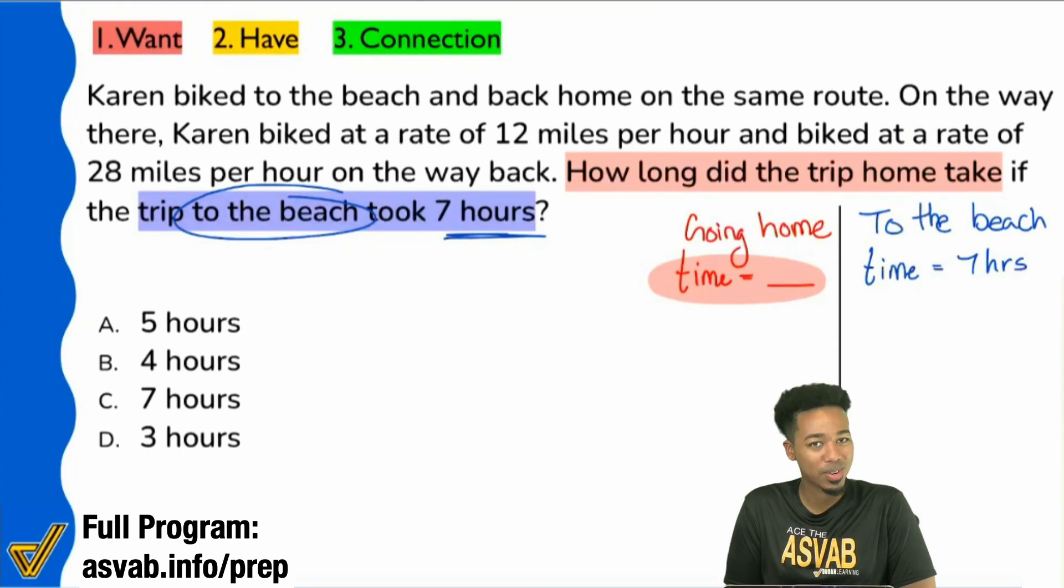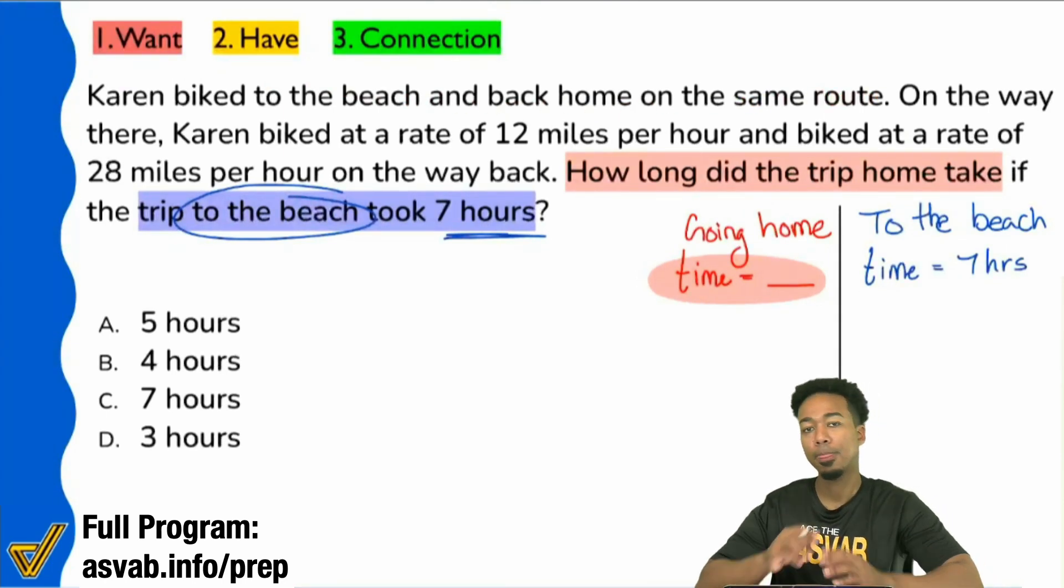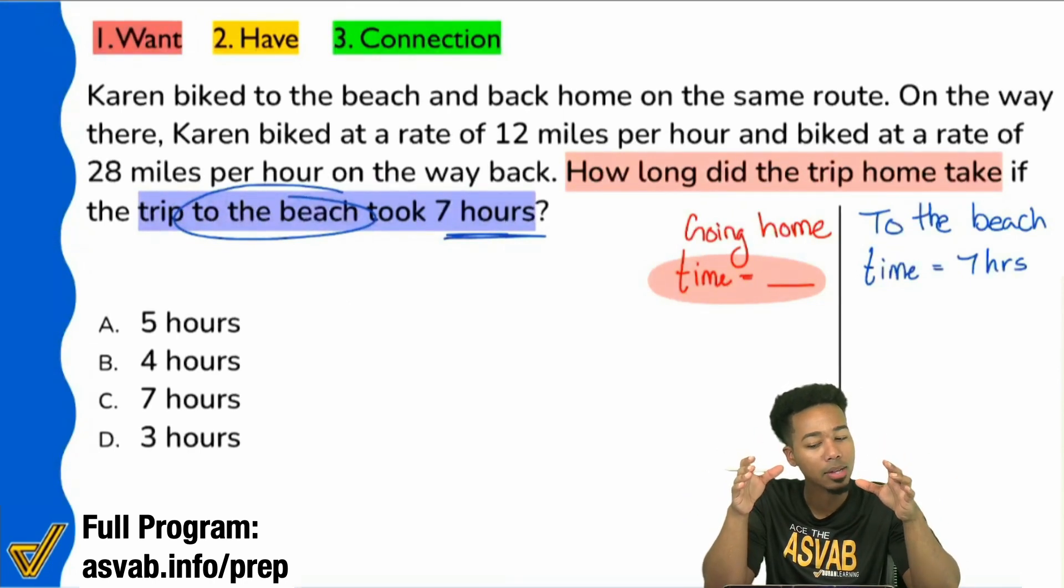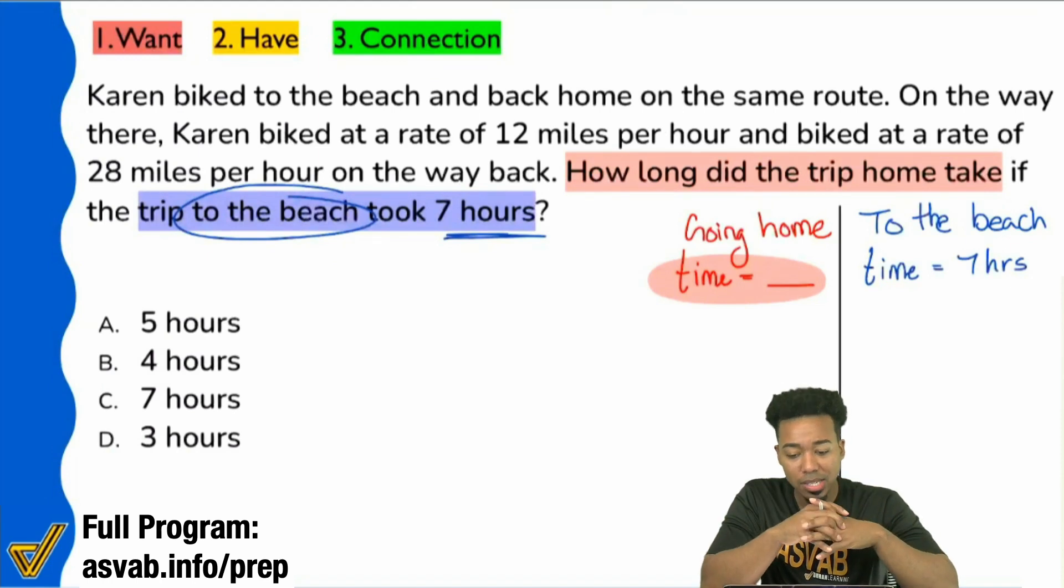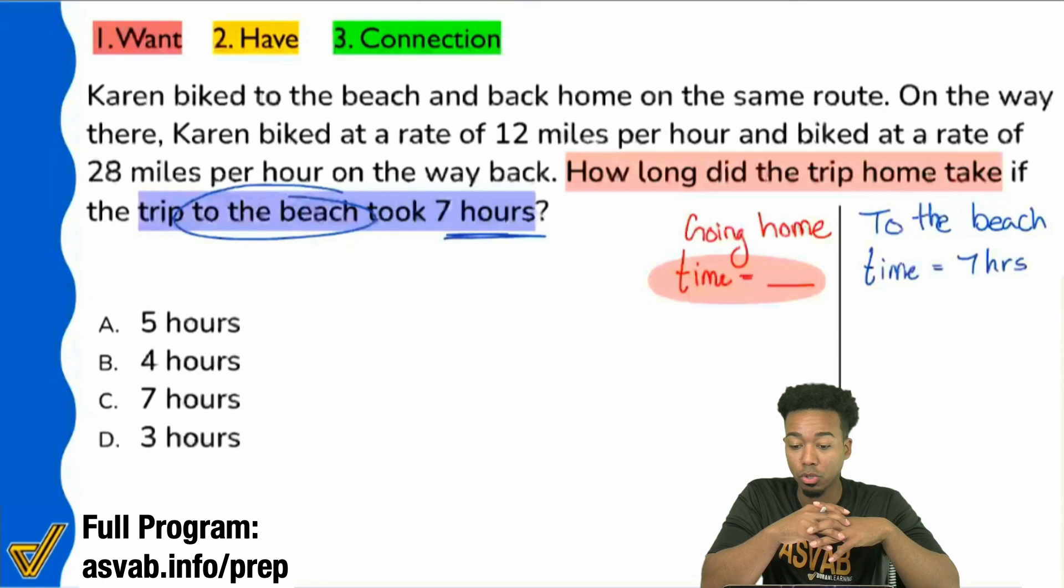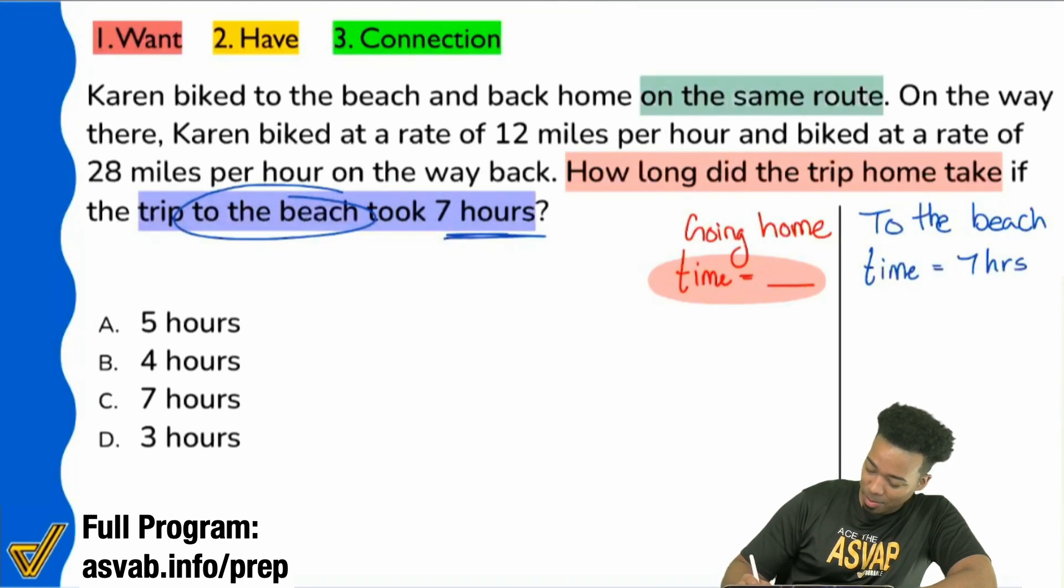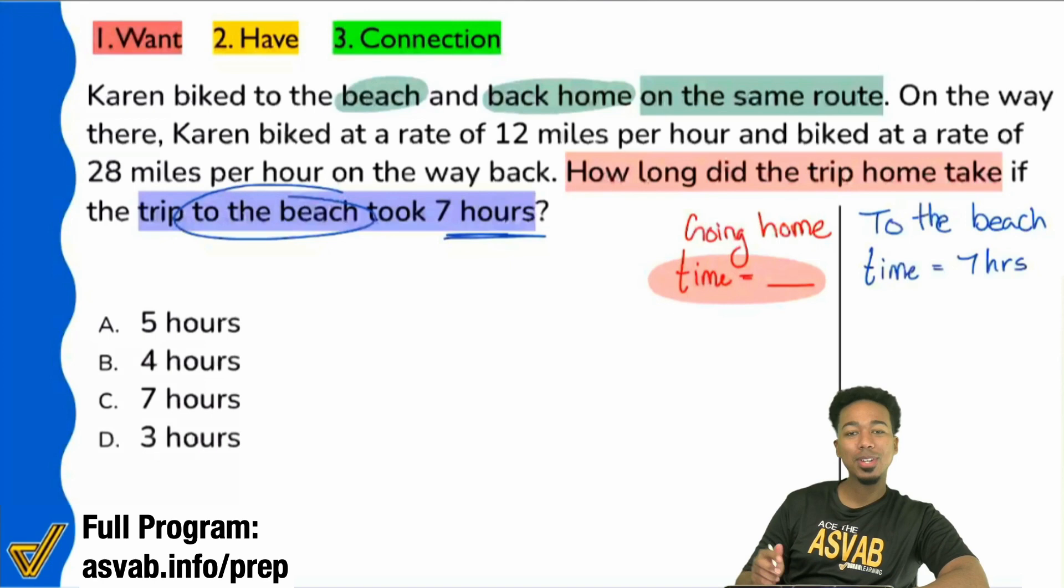Let's go ahead and read through the information. There's going to be some very important keywords that we want to highlight right over here. Number one, Karen biked to the beach and back home on the same route. Everyone, what do you think that might mean if we see that someone goes to the beach and then they go back home on the same exact route? What might that mean? So it looks like we might have a pattern showing up. What do you guys think? Same road, same distance? Okay, let's just see what we keep coming up with. But I'm going to highlight that. On the same route, beach and back home on the same route. I'm going to leave that highlighted. It's going to be very important in a moment.